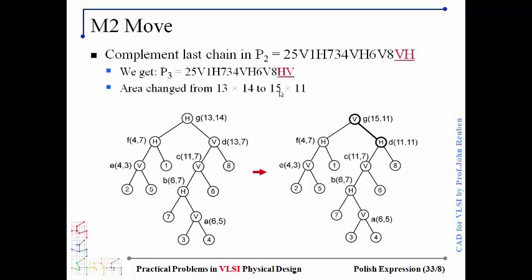The second move involves complementing a chain of operators. Here we have the present Polish expression where the last chain of operators is complemented — VH becomes HV. You can see there was an H and a V here, and this move has changed it.